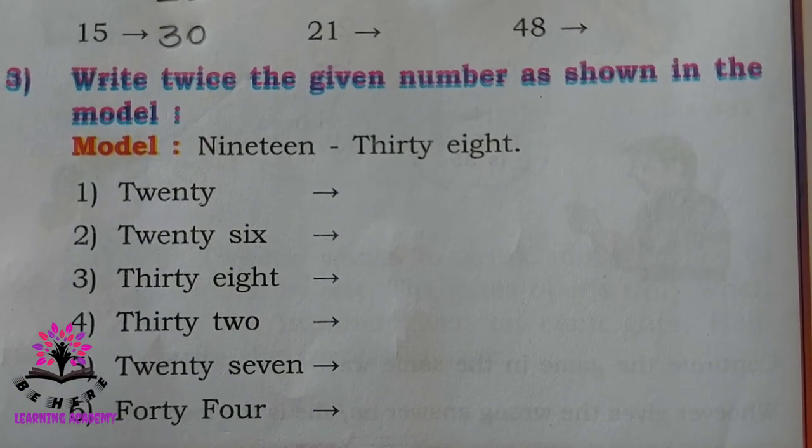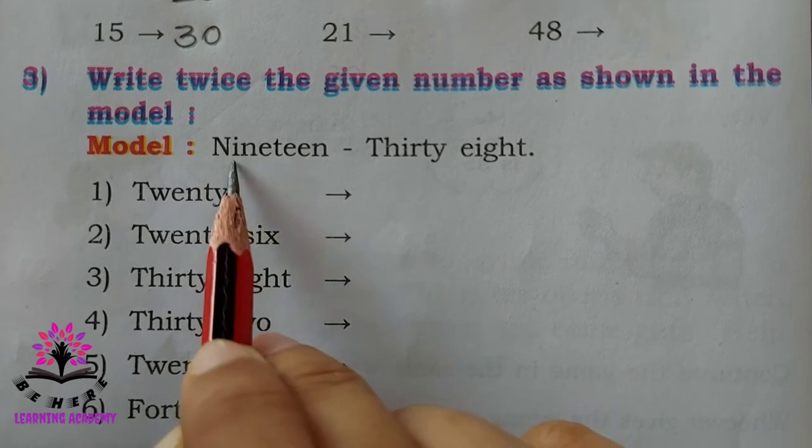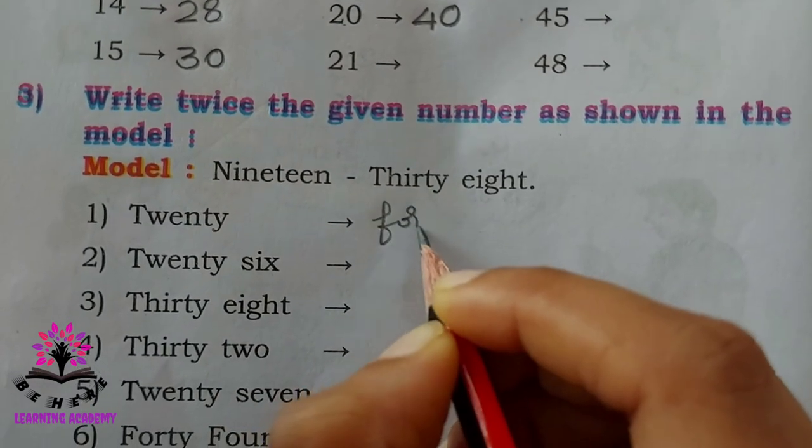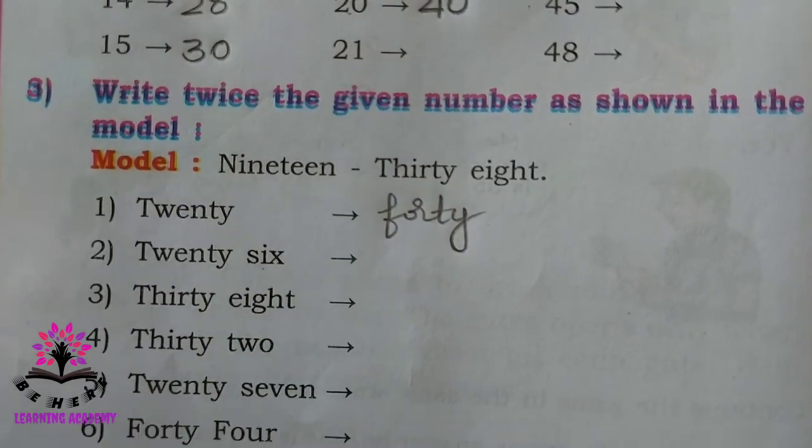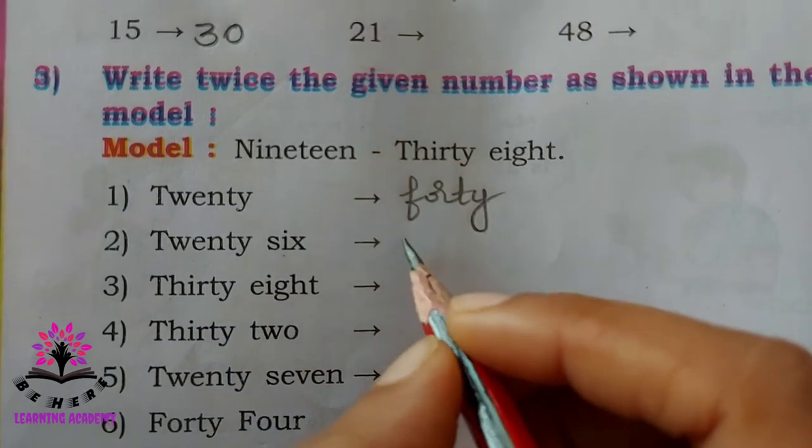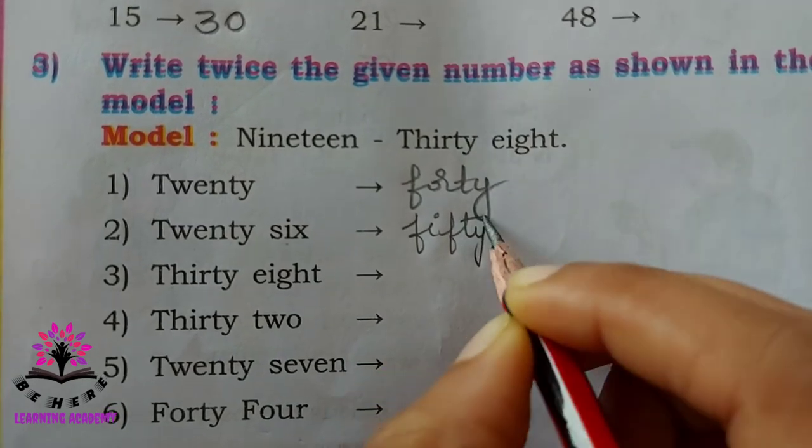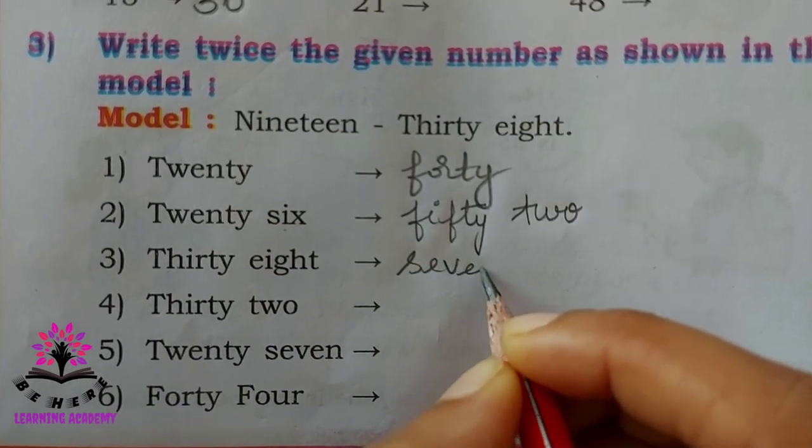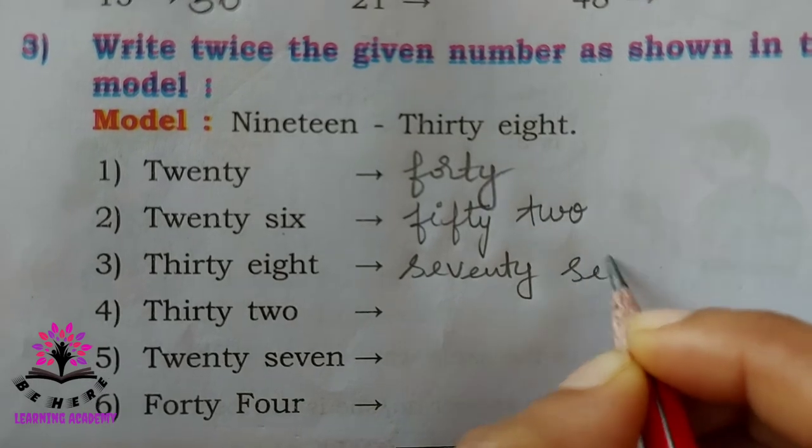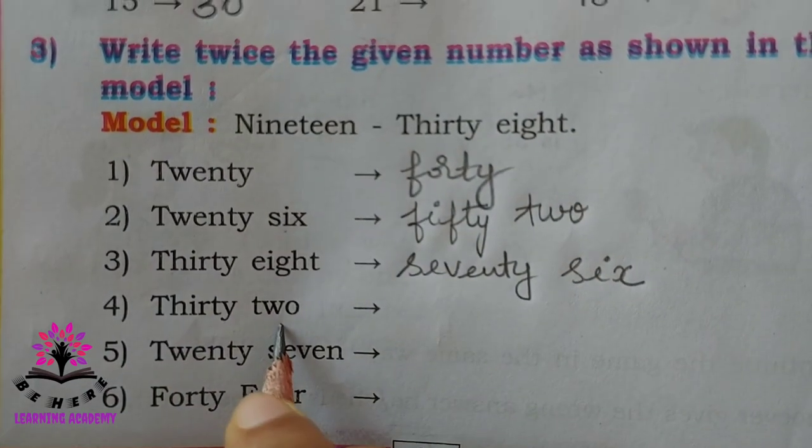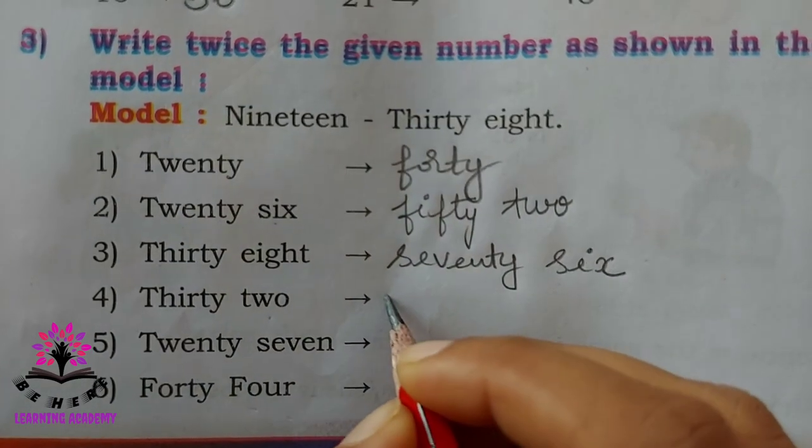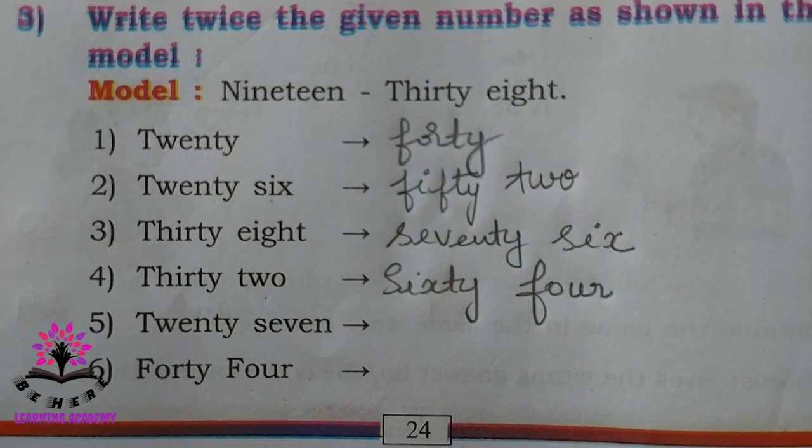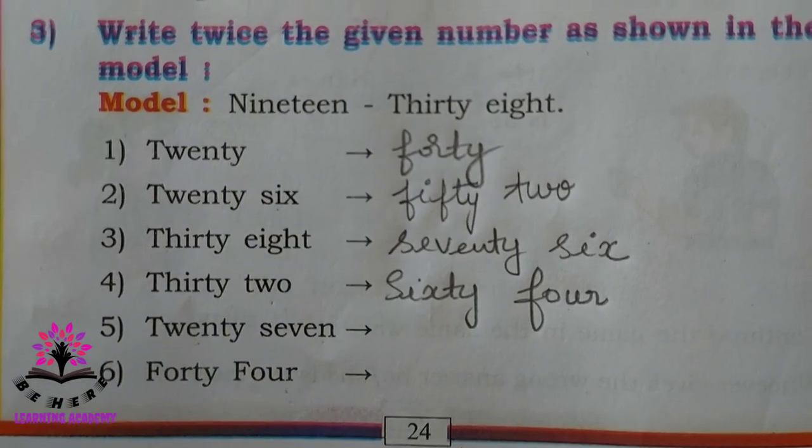Write twice the given number as shown in the model. Here see here 19 is 38. 20 is, you have to double it, 20 is 40. 26, when we double 26 it is 52, isn't it? 52. Then 38, 38 is 76. 32, 32 is 64. 27 and 44 you have to do by yourself.